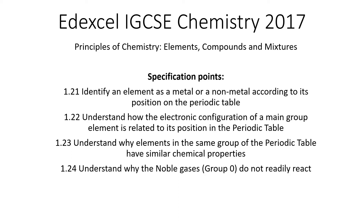In addition, we'll also be looking at 1.21 — identify an element as a metal or a non-metal according to its position on the periodic table; 1.22 — understand how the electronic configuration of a main group element is related to its position in the periodic table; 1.23 — understand why elements in the same group of the periodic table have similar chemical properties; and 1.24 — understand why the noble gases, group 0, do not readily react.